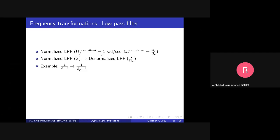You design a filter with these specifications — passband cutoff frequency Omega P — and after that simply replace S with S by Omega P to convert it to a low pass filter with passband cutoff frequency Omega P and stopband cutoff frequency Omega S. For example, consider a first-order low pass filter: H(S) = 1 / (S + 1).